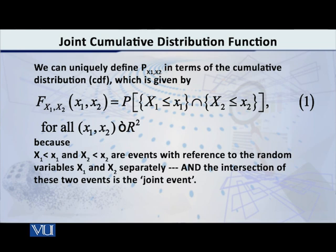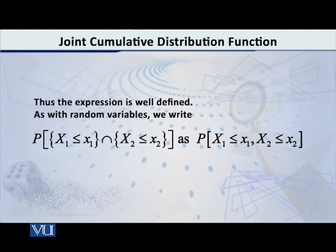It is quite simple — it is just a natural extension of the concept of the cumulative distribution function in the case of one single variable. You will note that we are saying capital X1 is less than or equal to small x1, and capital X2 is less than or equal to small x2. So we can say that this is a joint event.